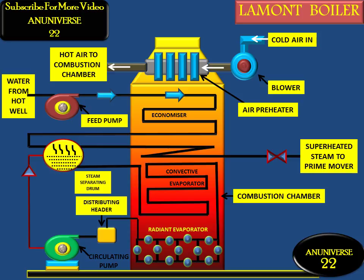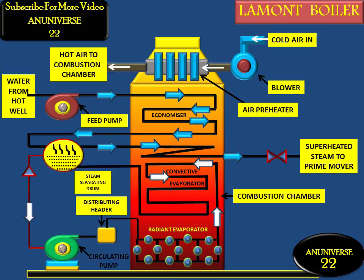Here we can see the direction of the water flow: it comes out from the feed pump to the economizer. From the economizer it goes to the steam separating drum. From the steam separating drum, saturated steam goes towards the superheater, and water comes towards the centrifugal pump. From the centrifugal pump it is supplied to the evaporator tubes.